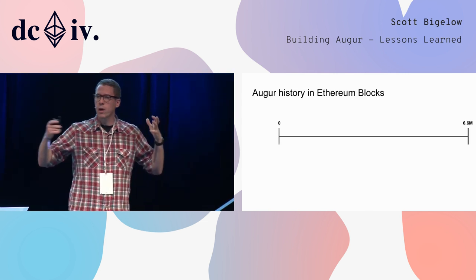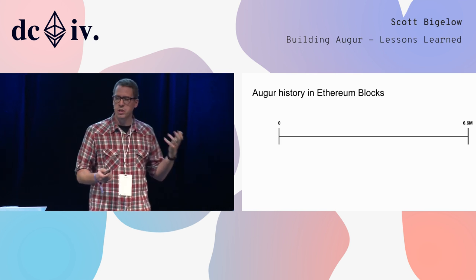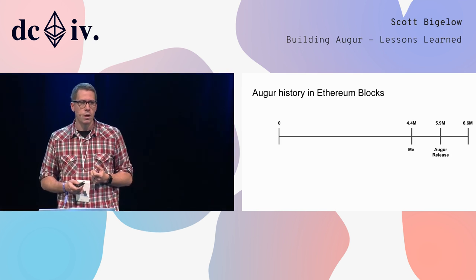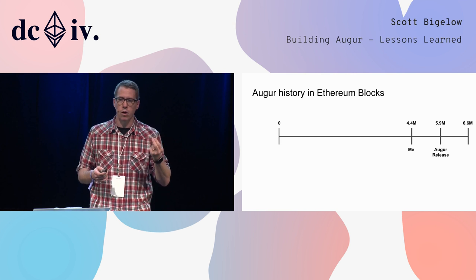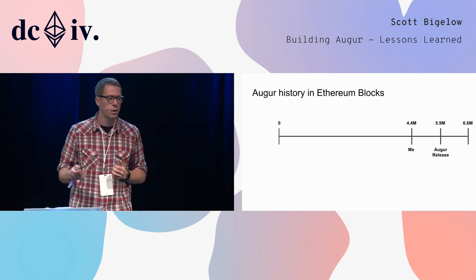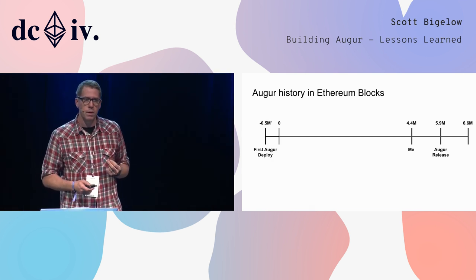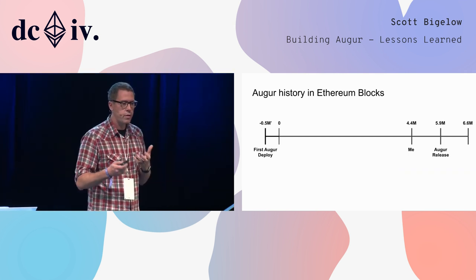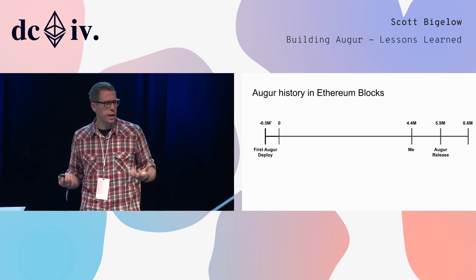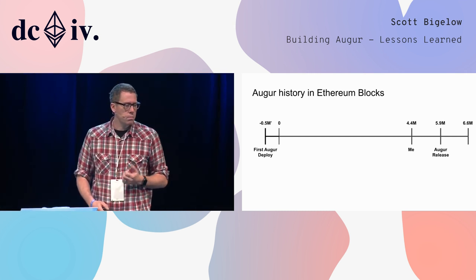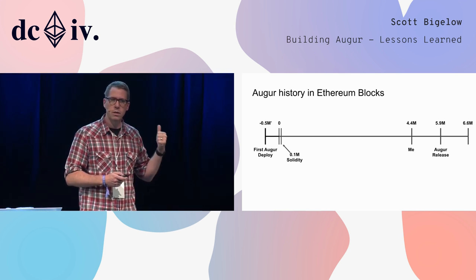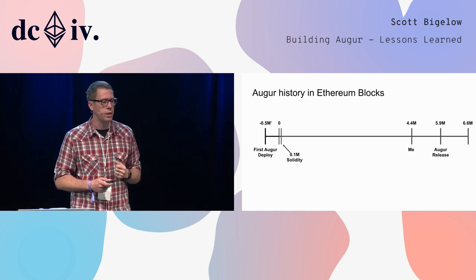Augur is also a fairly old project. We're currently sitting at block 6.6 million. The release took place around block 5.9; my involvement started at 4.4. But if you want to go back to the very first Augur contract deployment, you need to go before block 0 — this system was developed well before Ethereum mainnet launched, on a test network called POC 9. This was actually before Solidity — Solidity 0.1.0 was released later — so these contracts were written in Serpent, a different smart contract language that compiles down to EVM code.